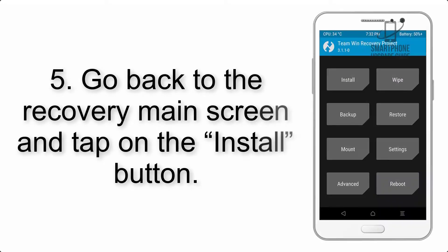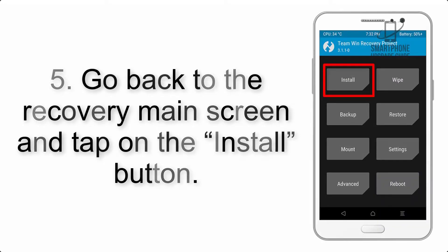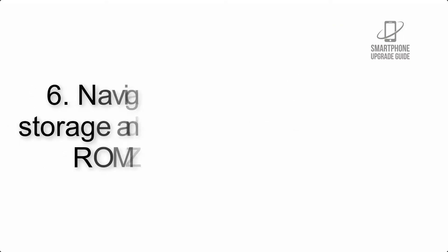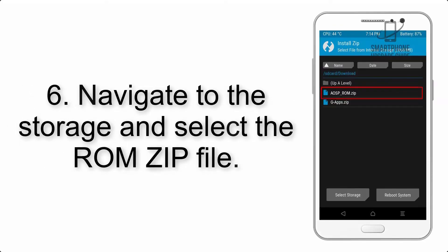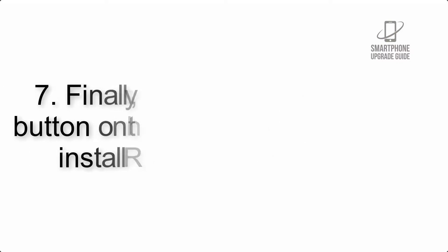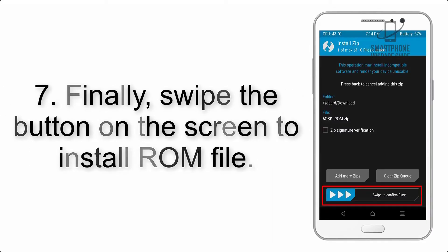Step 4: Swipe the button to wipe the device. Step 5: Go back to the recovery main screen and tap on the Install button. Step 6: Navigate to the storage and select the ROM zip file.